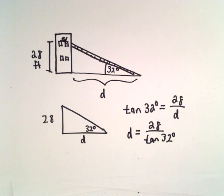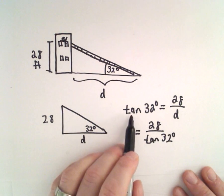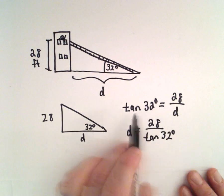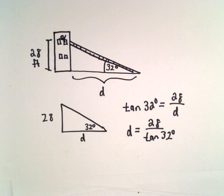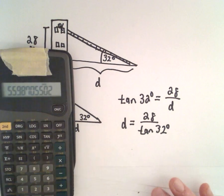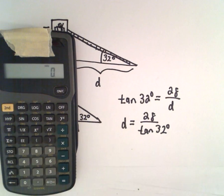You could likewise have used cotangent of 32 degrees, and then you would have had D over 28. It might have made the algebra a touch easier, but my calculator does not have a cotangent button. So that's why I'm going to keep everything in terms of tangent.